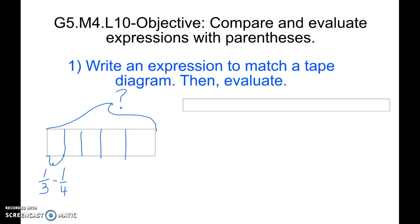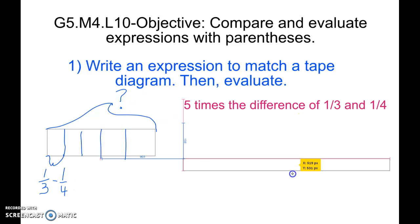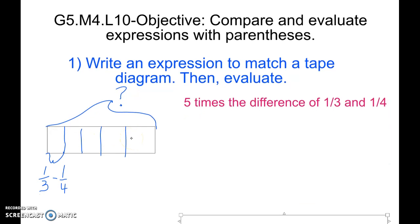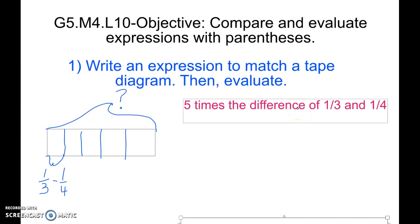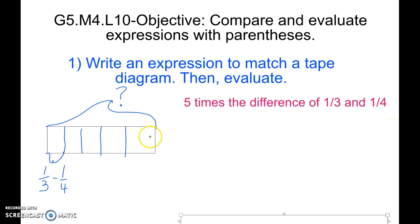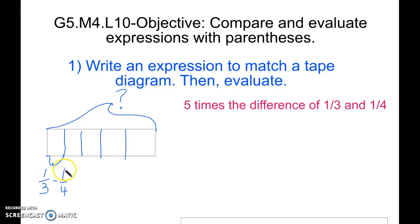In our second example, we are looking for the whole of this tape diagram. We know to start that we have 1, 2, 3, 4, 5 equal parts, or 5 units. We know that 1 unit is equal to 1/3 minus 1/4. So our initial expression then is going to be 5 times the difference of 1/3 and 1/4. So 5 times the difference of 1/3 minus 1/4.